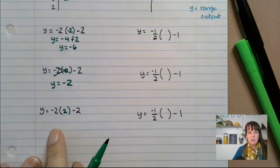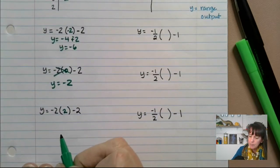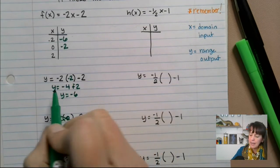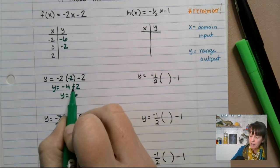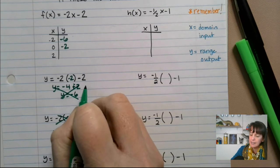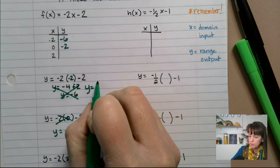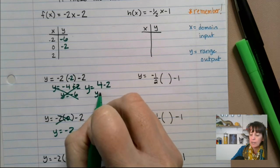On our last one down here, we have negative four. Oh, I made a mistake back here. I said this is negative two. That is not negative. A negative times a negative is a positive. Let's try that again. Y equals negative times a negative is a positive. So it's four minus two, which means y equals two.